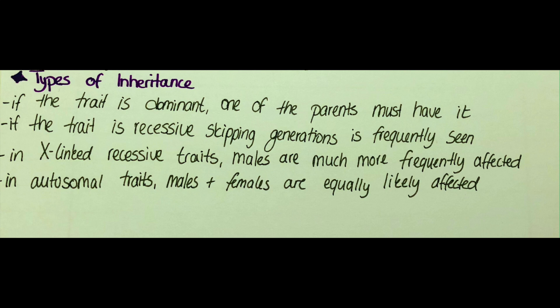There are also different types of inheritance. I talked about those in the genetic series before, so if you haven't seen those videos yet you can go back and watch them first. If the trait is dominant, then one of the parents must surely have it. If the trait is recessive, then skipping of generations is frequently seen, as there might be carriers who are heterozygous and only carry the gene, passing it on to children who may have the gene but not express it.